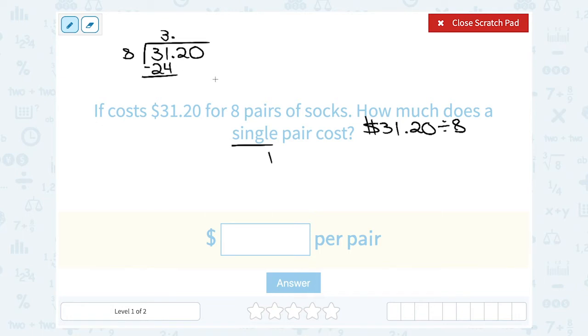And now we want to subtract. 31 minus 24 is seven. Eight does not go into seven. So I'm going to bring down my next place value, my two that was in the tenths place.